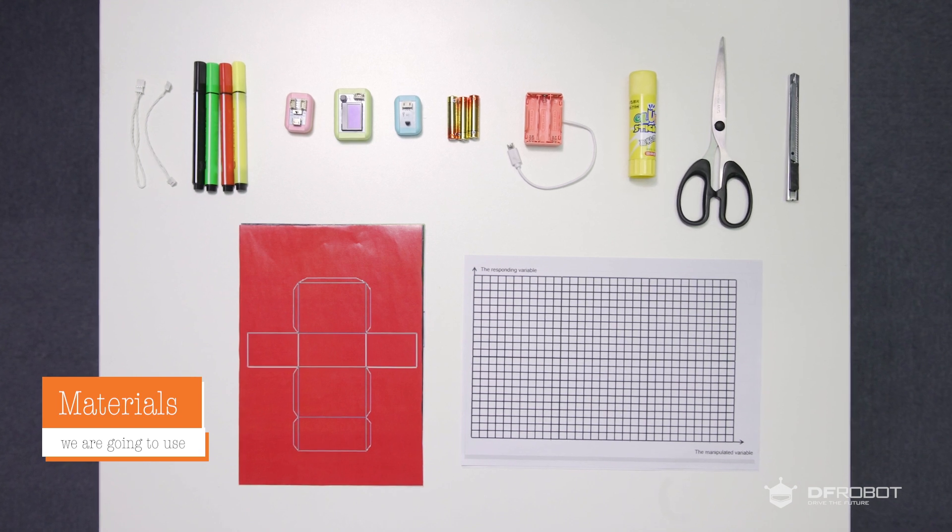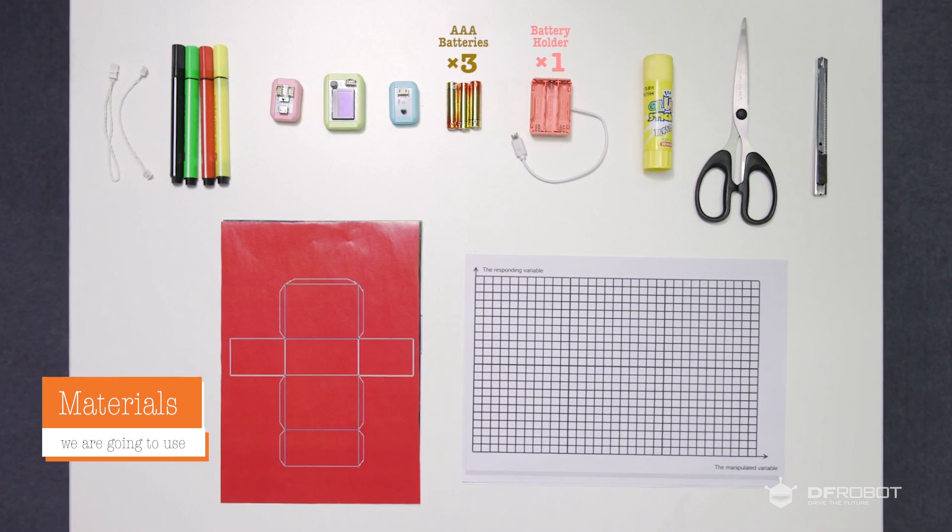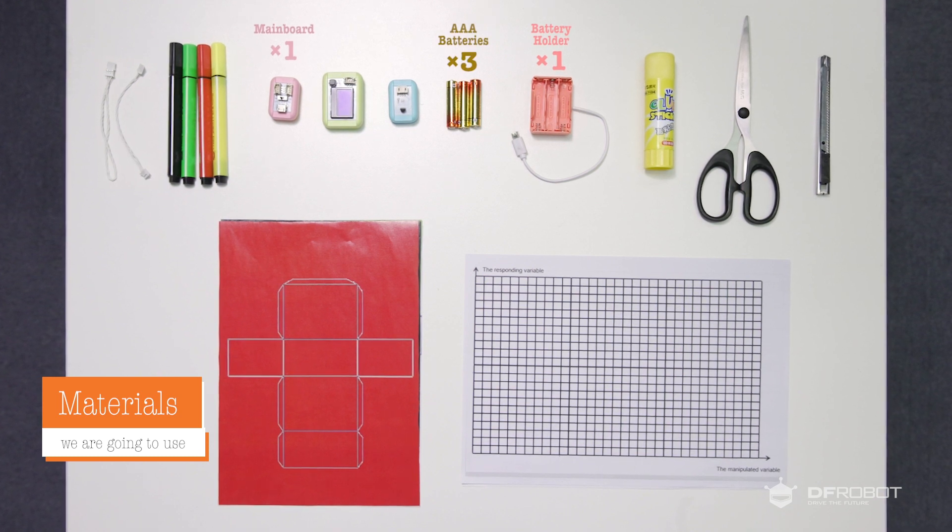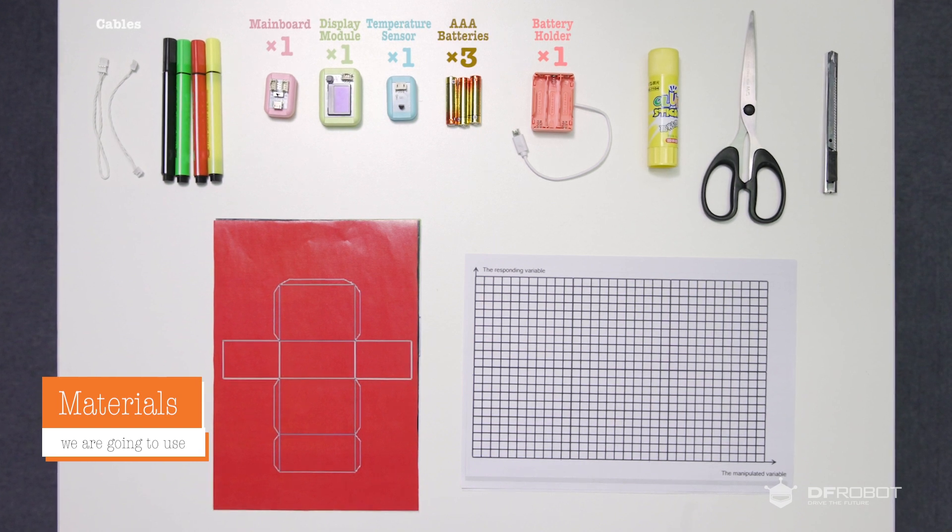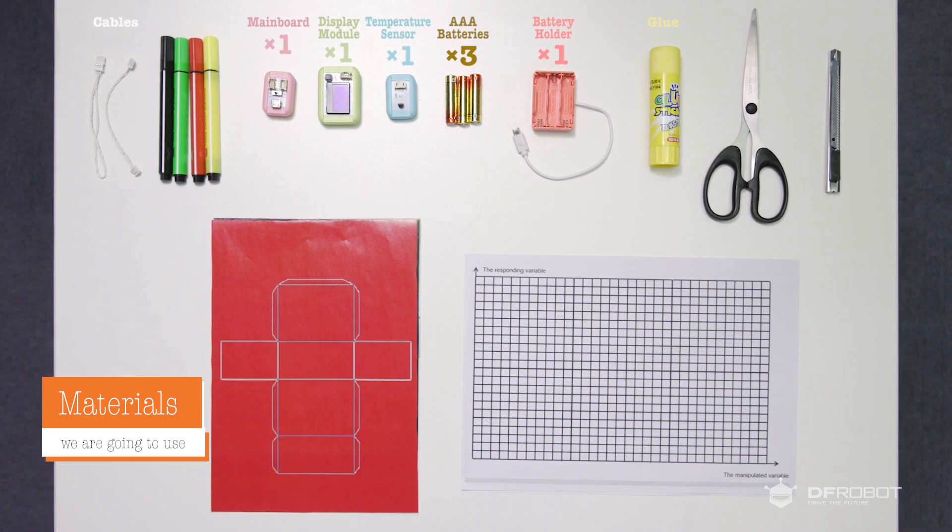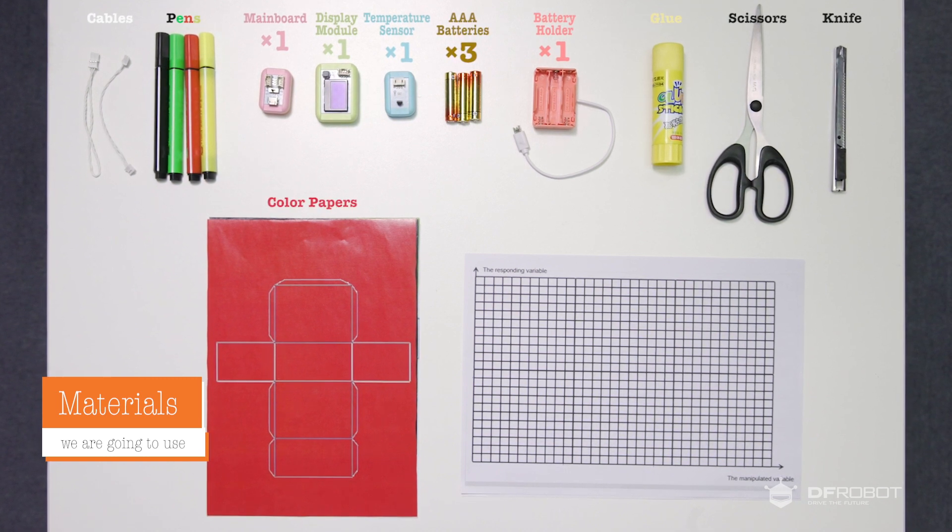Before the experiment, let's see the material we're going to use. A battery holder, three AAA batteries, a main board, a temperature sensor, a display module, several cables, and other additional materials like glue, scissors, knife, color pens, and color papers as we mentioned before.